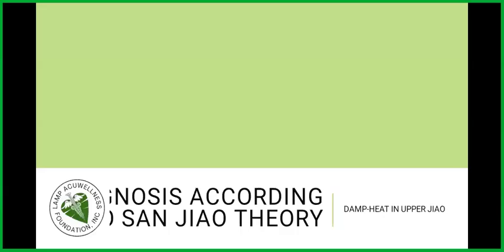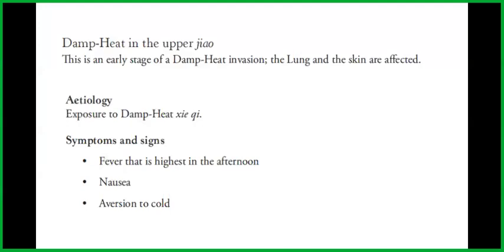Let's go to diagnosis according to Sanjiao theory. The topic is damp heat in upper jiao. Damp heat in the upper jiao is an early stage of a damp heat invasion. The lung and the skin are affected. The etiology is exposure to damp heat pathogenic qi.